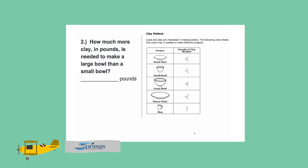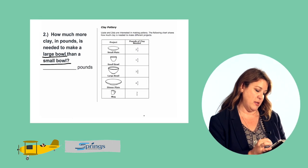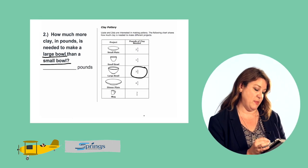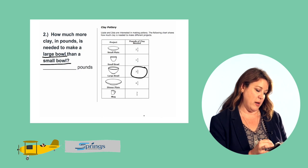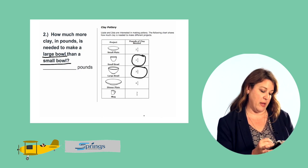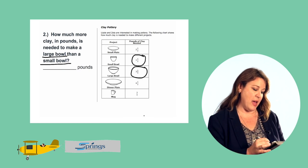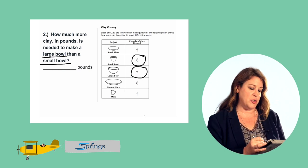So we need to look at our table and we're comparing the large bowl with the small bowl. The large bowl takes three and one fourths pounds of clay and the small bowl takes one and a half pounds of clay. So we're comparing halves and fourths. Those are two different things.